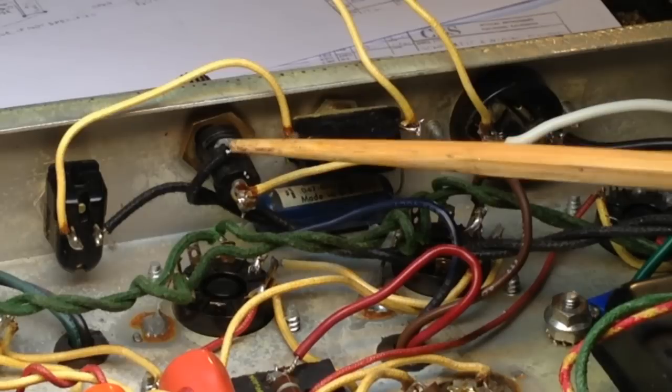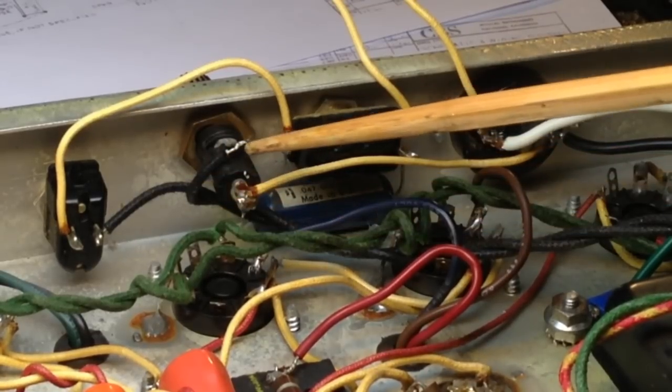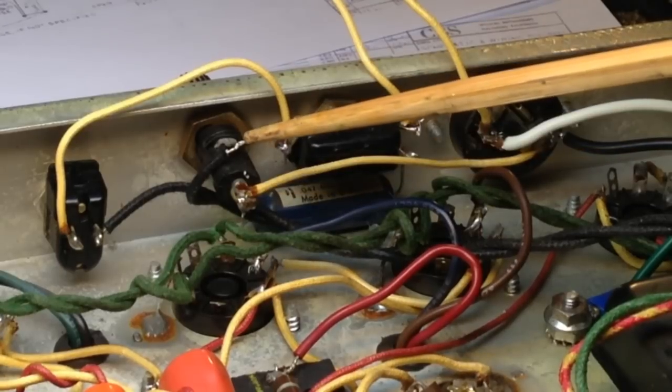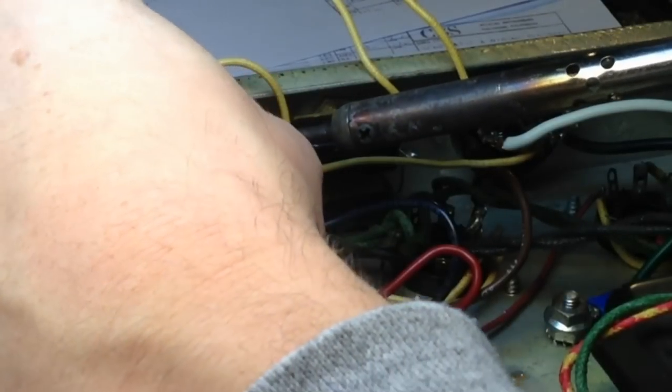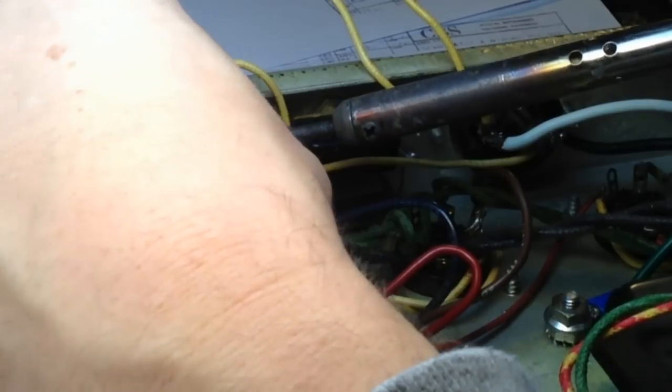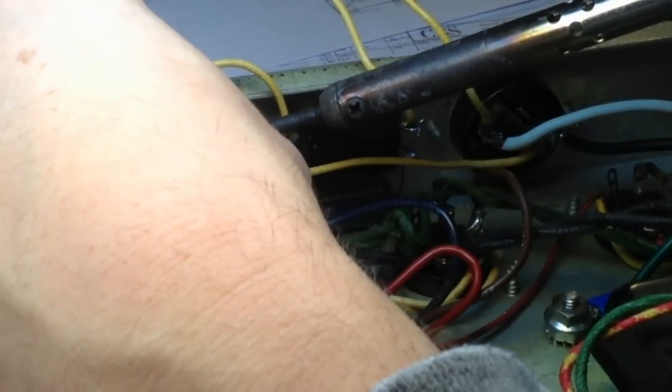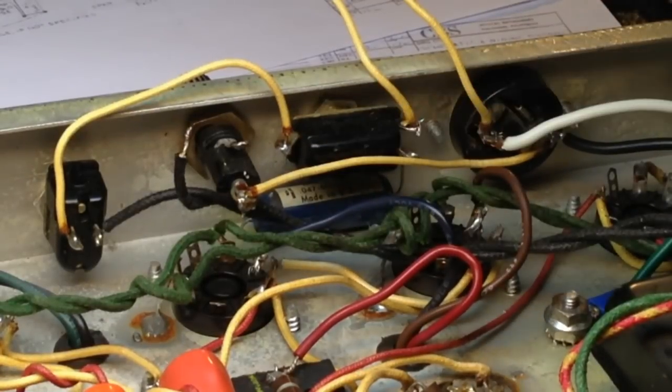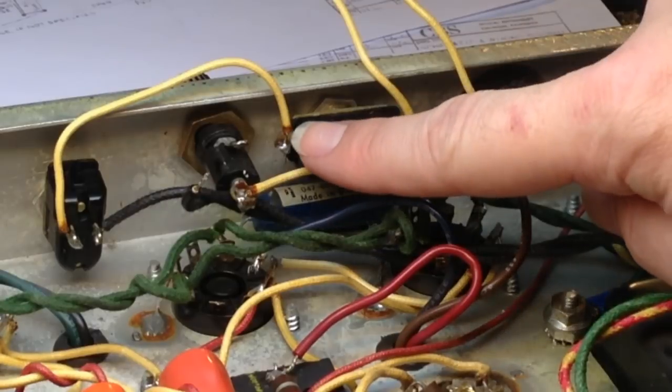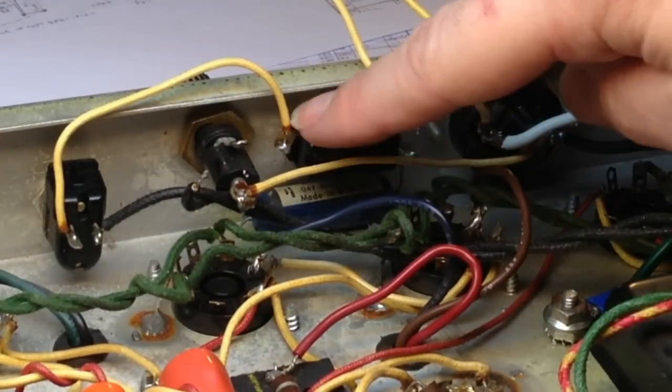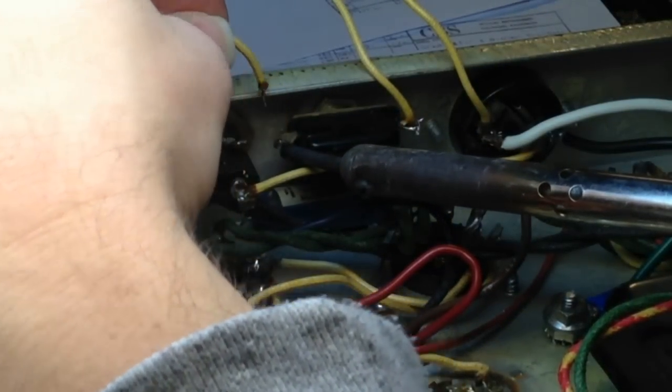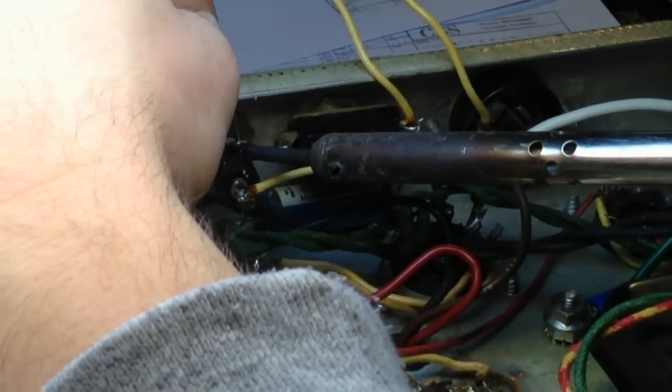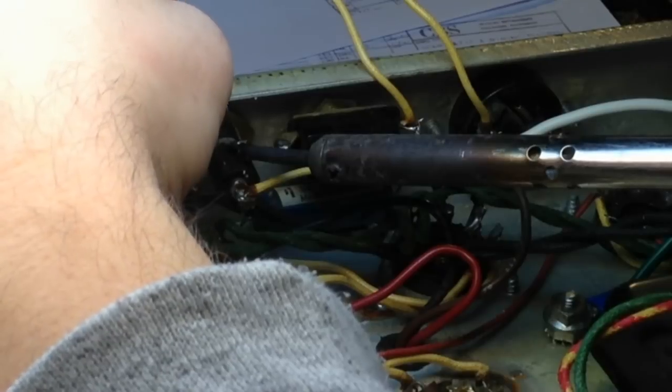Next thing to do is to remove the black wire that's going to the transformer from the ring of the fuse holder. And we're going to do something different with that wire. And I will explain why in just a moment. Okay, so there's that one removed. And now we will remove the yellow wire that's going to the other side of the polarity ground switch.